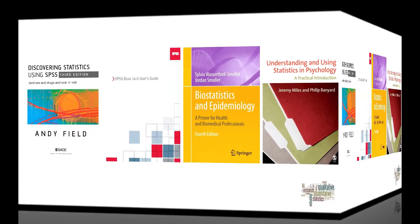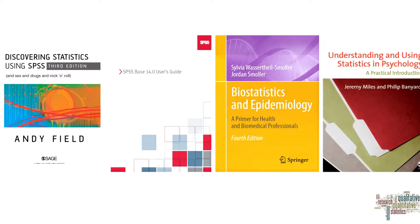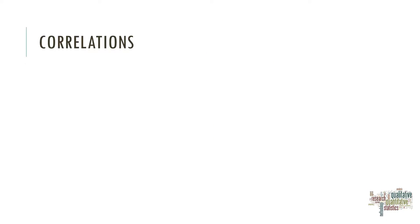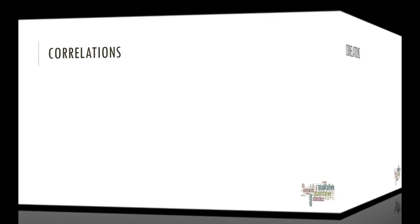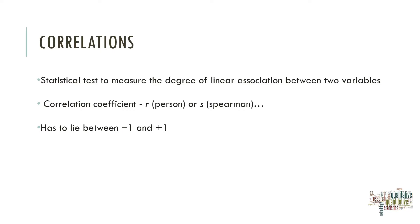Before we jump to the SPSS environment, I will give you some general notions about correlations to help you build meaning about what a correlation is. A correlation is a statistical test that measures the degree of a linear association between two variables. A correlation coefficient is expressed as R when we talk about Pearson correlations, or S when we talk about Spearman correlations, and it typically lies between minus one and plus one.